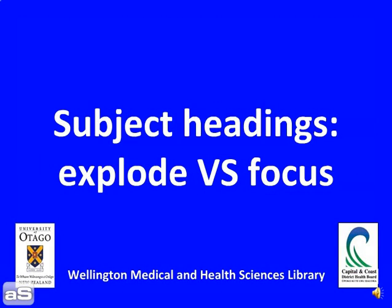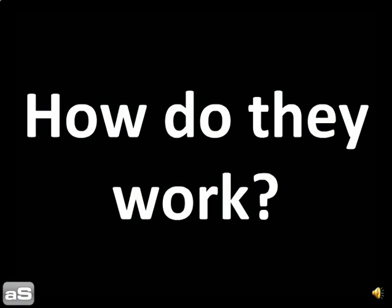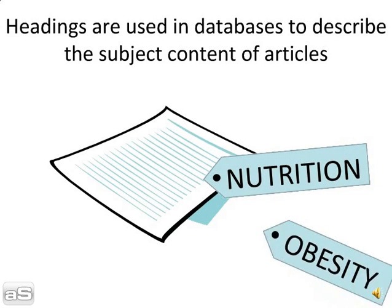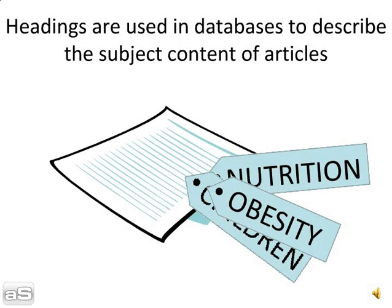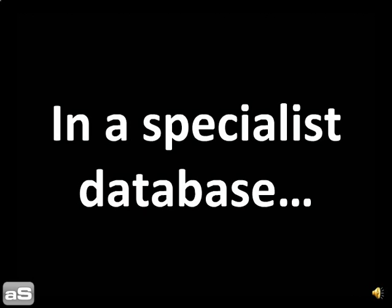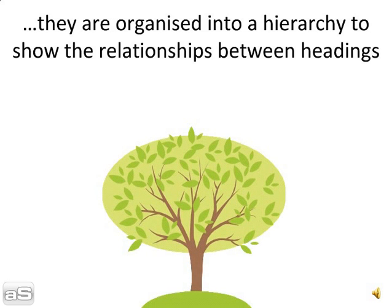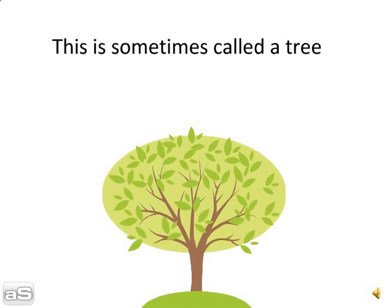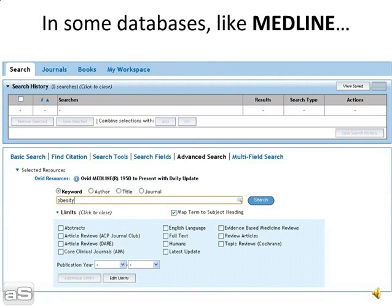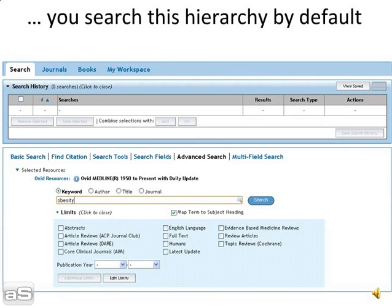Subject headings: explode versus focus. How do they work? Headings are used in databases to describe the subject content of articles. In a specialist database, they are organised into a hierarchy to show the relationships between headings. This is sometimes called a tree. In some databases, like Medline, you search this hierarchy by default.